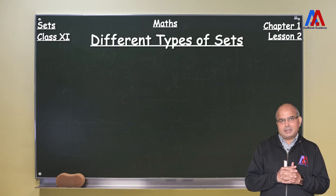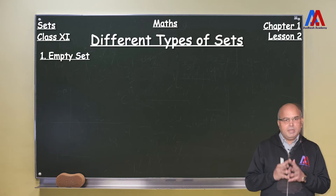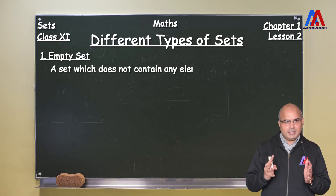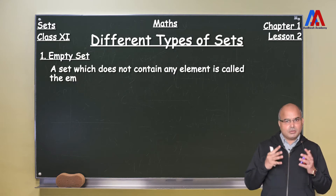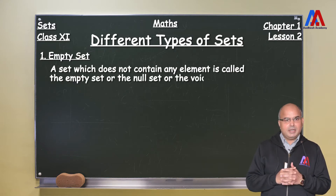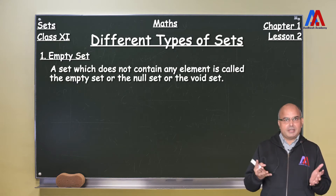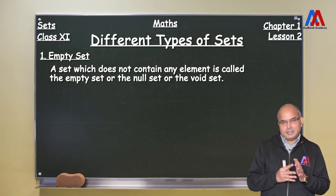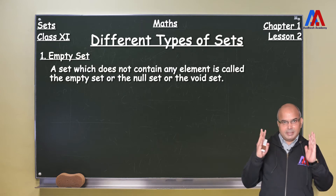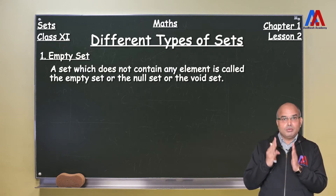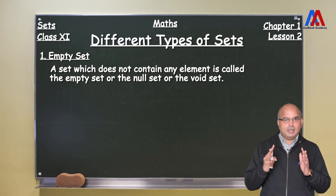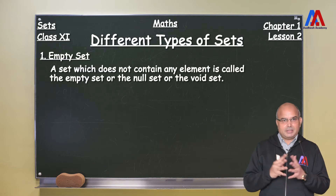The first type of set is called empty set. Empty set means a set which does not contain any element. Empty set is also called a null set or a void set. The meaning of this is that if there is a set which has no element at all, then that will be called an empty set.